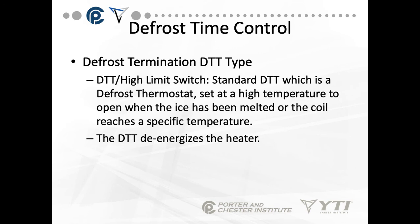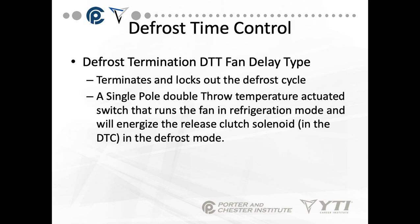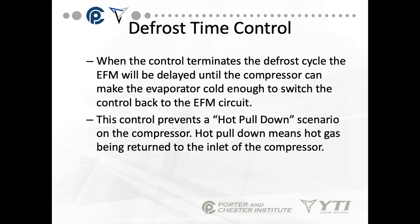The defrost termination type is basically a high limit switch — a standard DTT, or defrost thermostat. It's set to a high temperature to open when the ice has been melted or the coil reaches a specific temperature. The DTT also de-energizes a heater; if there's electric heat, the DTT will act as a high limit and de-energize the heater as well. If it's a fan delay type, it terminates and locks out the defrost cycle. Then the single-pole double-throw temperature-actuated switch that runs the fan in refrigeration mode will keep the fan off until the coil has reached a cooler temperature. When the control terminates the defrost cycle, the evaporator fan is delayed until the compressor can make the evaporator cold enough to switch the control back to the evaporator fan motor circuit.